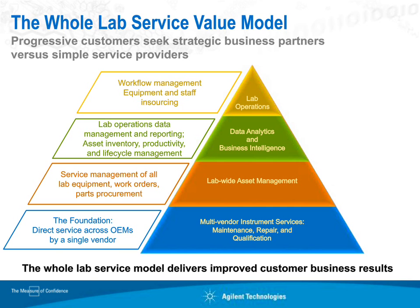In the asset management tier, we take care of inventory of your lab equipment, what work orders are associated with which instruments, parts used and why, and additional parts procurement for your on-site parts cache. The third tier — the focus of today — is around data analytics and business intelligence. This is lab operations data management where we collect data from multiple different sources, analyze it, and put it in a variety of reports. We can evaluate your lab productivity and track the lifecycle of your equipment from new acquisition all the way until it's time to retire or repurpose it.